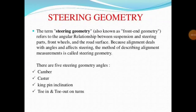In our unit, we cover steering geometry. The term steering geometry refers to the angular relationship between suspension and steering parts, front wheels, and the road surface. Because alignment deals with angles and affects steering, the method of describing alignment measurement is called steering geometry. It is also known as front end geometry.